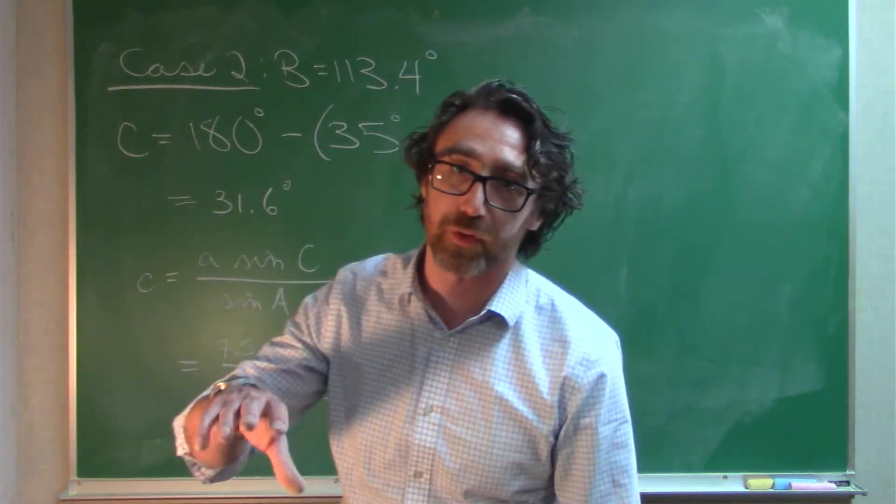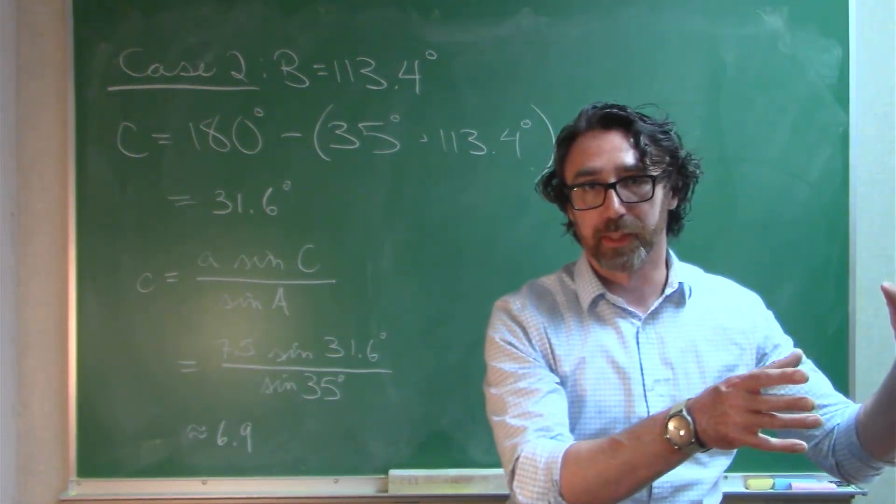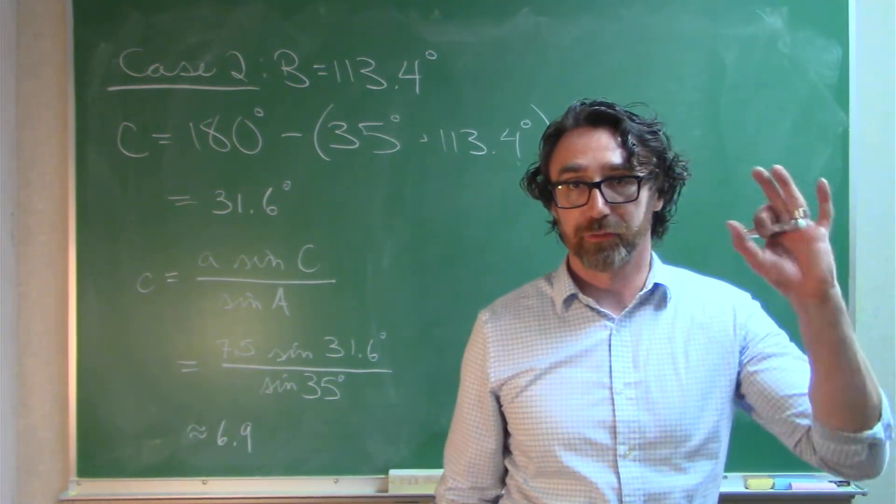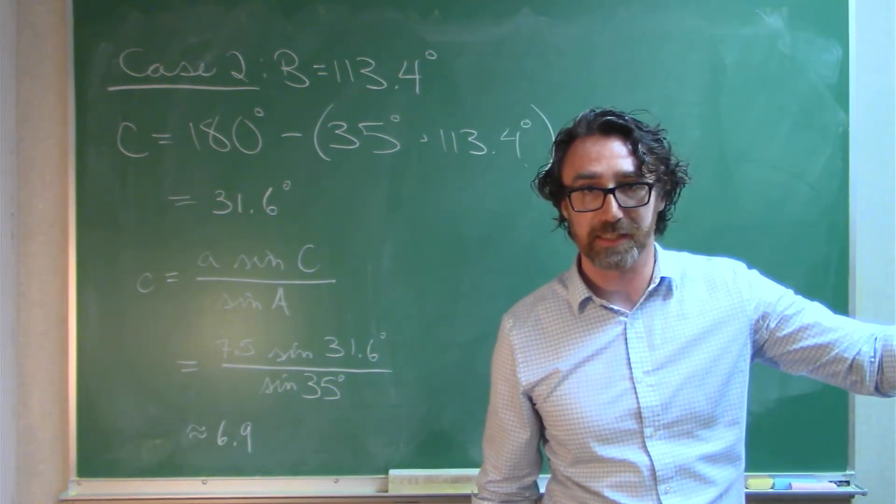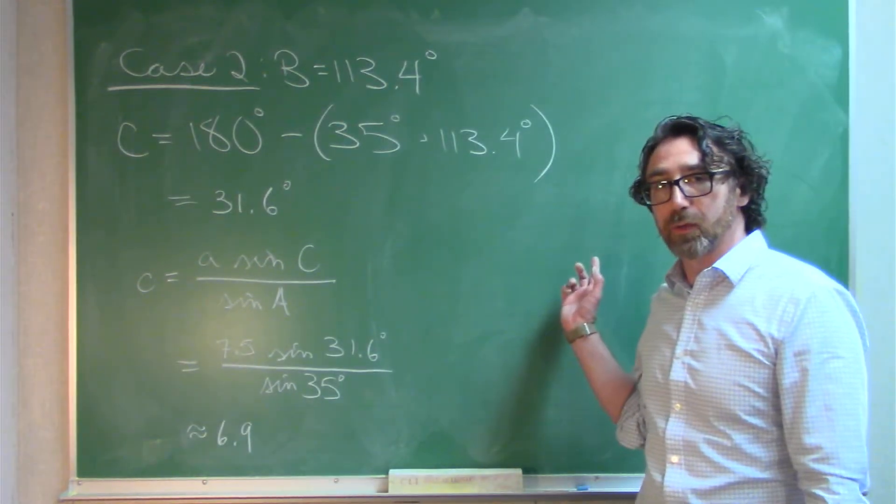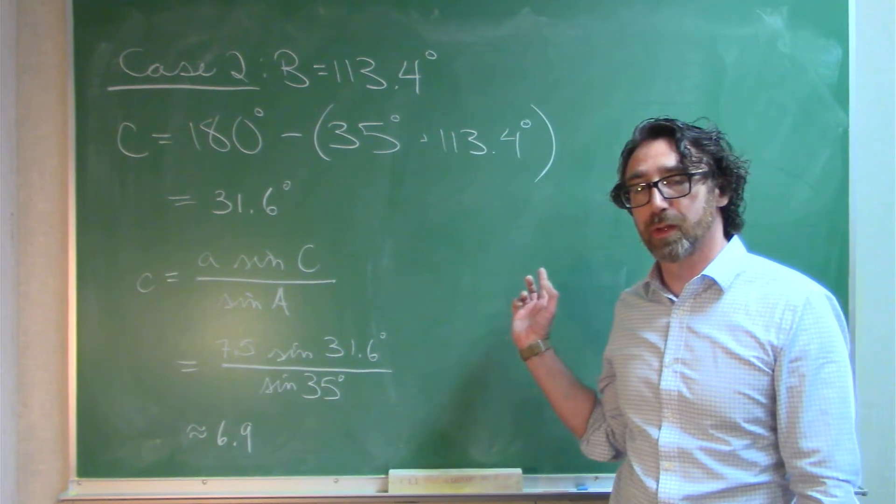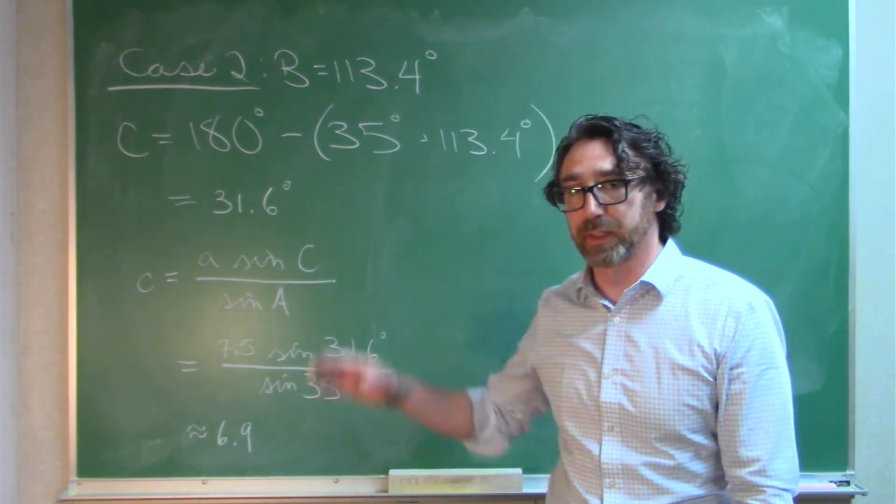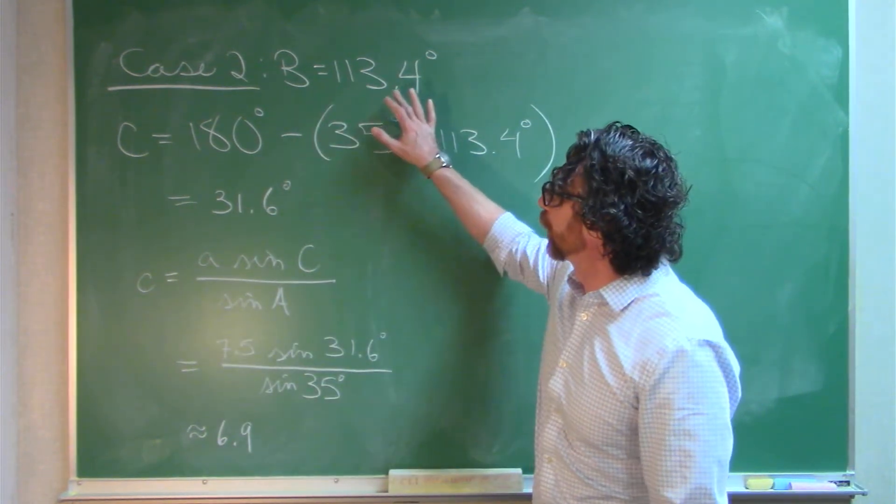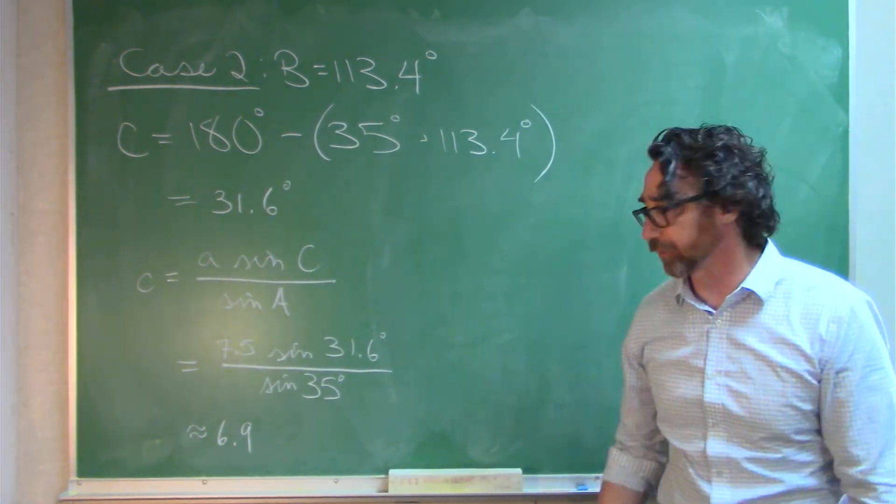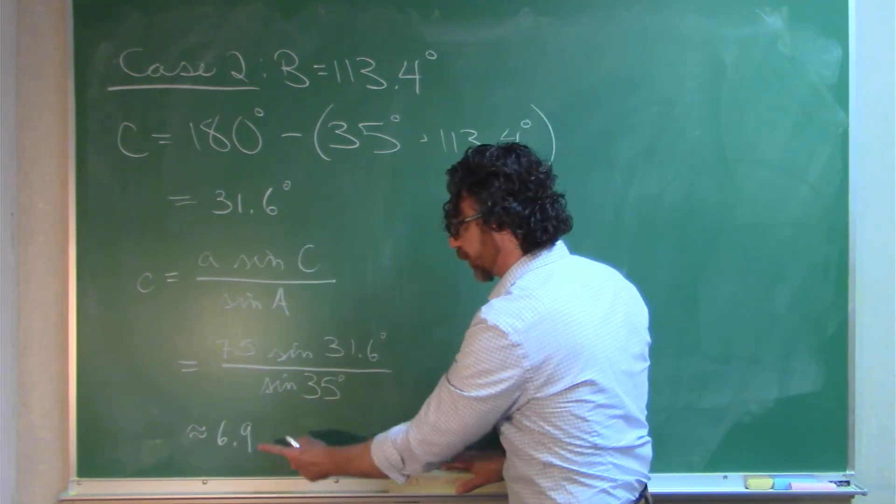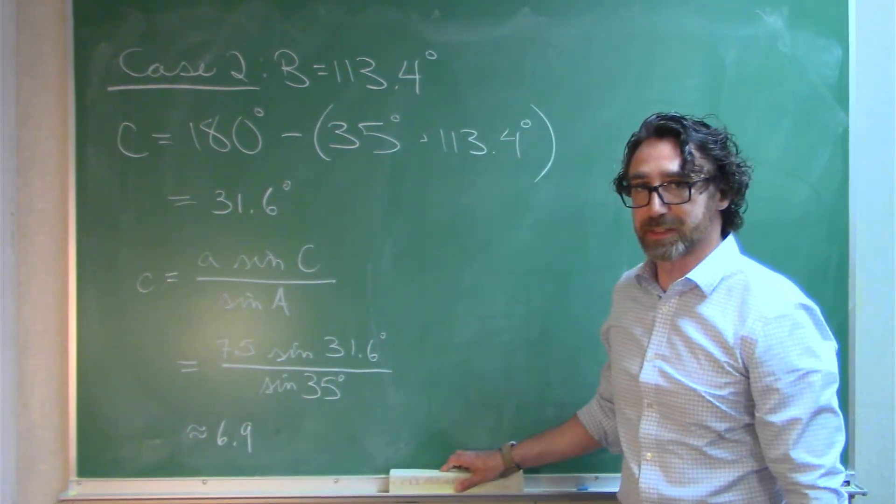Okay, so this is the second triangle that meets the conditions that we were given at the beginning, which was angle A is 35 degrees, side B is 12, side A is 7.5. The first case was when angle B was 66.6 degrees, and then we got values for side C and angle C. The second case is when B is 113.4 degrees. And then you get this information, angle C is 31.6, side C is 6.9.